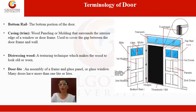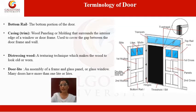Casing and trim refers to the wood paneling or molding that surrounds the interior edge of a door or window frame. This molding is used to cover the gap between the door frame and the wall.